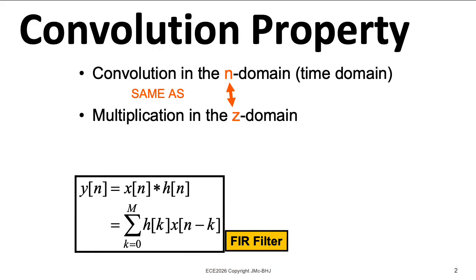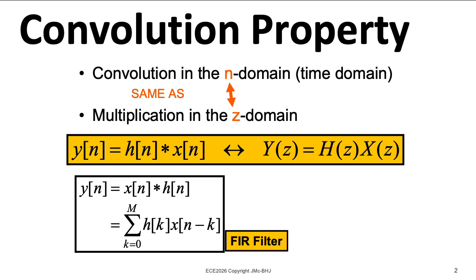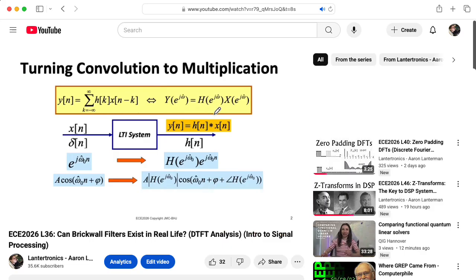Convolution is a fairly mind-bending operation. It turns out that if you convolve two signals in the time domain, that corresponds to multiplication in the Z-transform domain. Now, this shouldn't be very surprising. Discrete time Fourier transforms had the same property, and Z-transforms are a generalization of DTFTs.